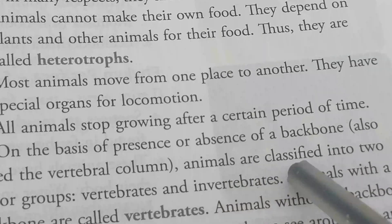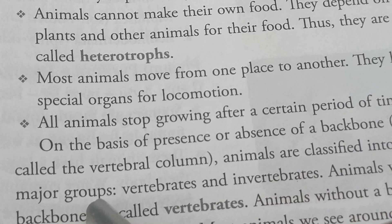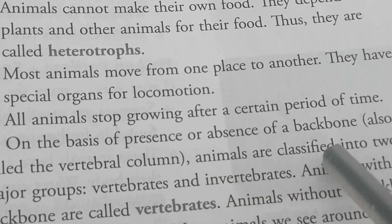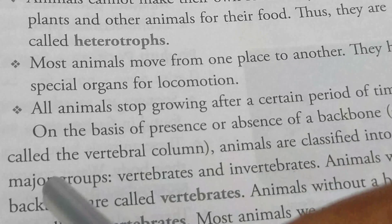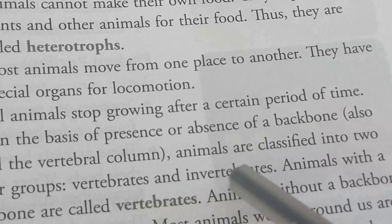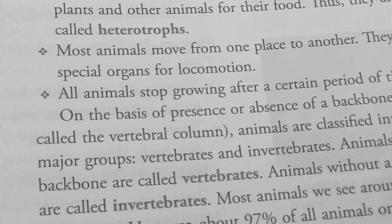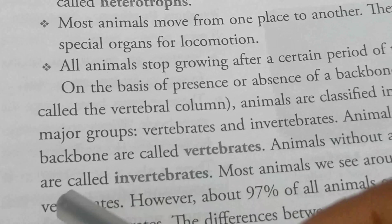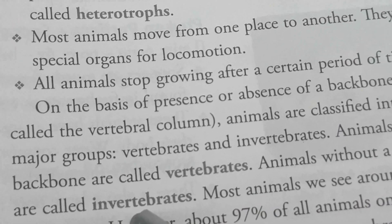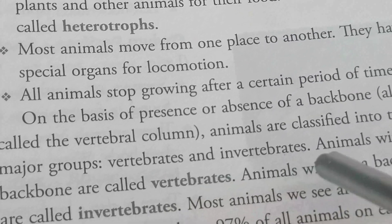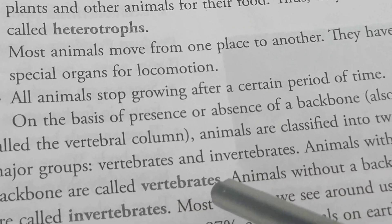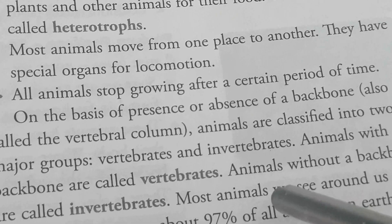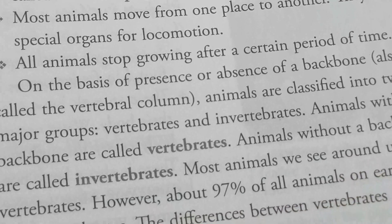On the basis of presence or absence of backbone, animals are classified into two major groups: vertebrates and invertebrates. Animals with a backbone are called vertebrates, and animals without a backbone are called invertebrates. Those that possess the vertebral column — the spinal cord — are vertebrates, and animals without a backbone are invertebrates.